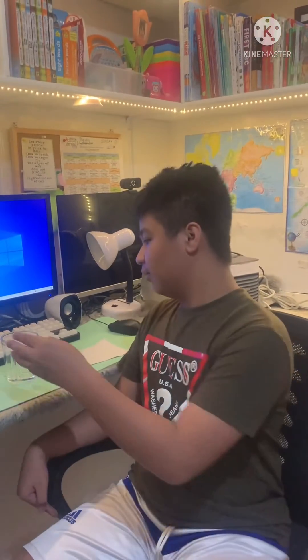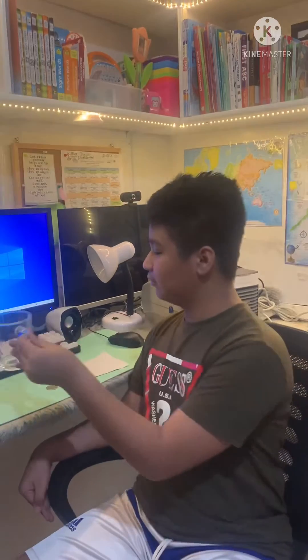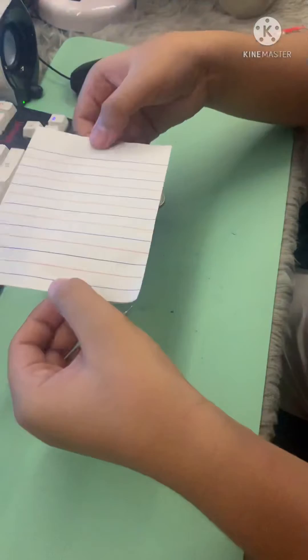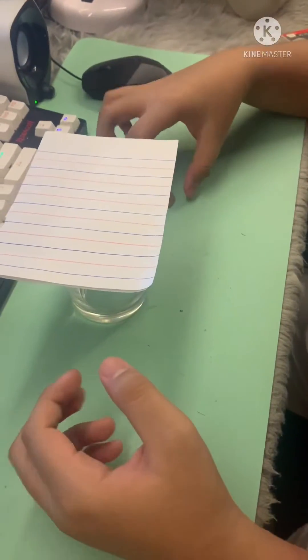Hi, today I'm going to show you the law of inertia by Isaac Newton. The materials we need are a glass, paper, and a coin. You place the paper on top of the glass and then place the coin on top of the paper.